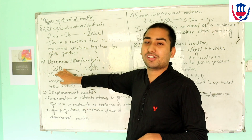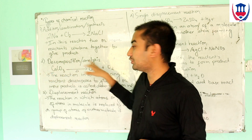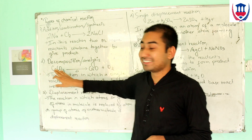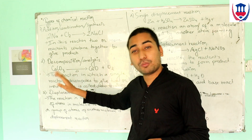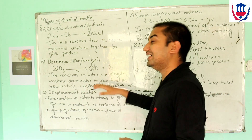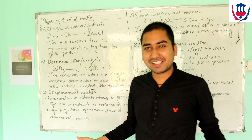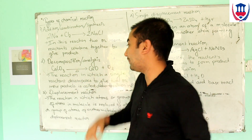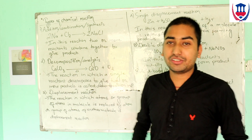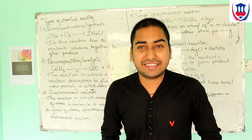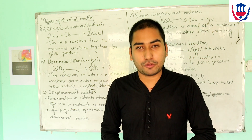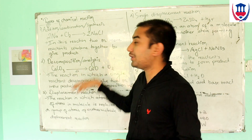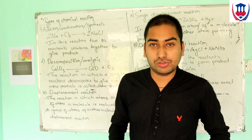Decomposition reaction: a single reactant decomposes into two or more products. For example, calcium carbonate (CaCO3) decomposes into CaO plus CO2. The chemical reaction in which a single reactant decomposes into two or more products is called decomposition reaction.